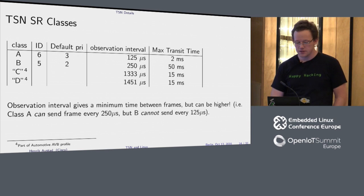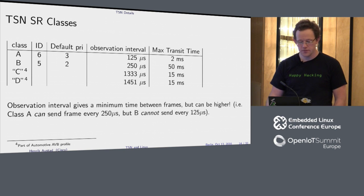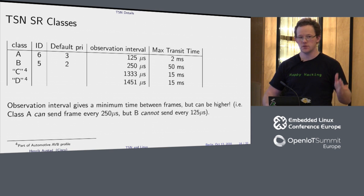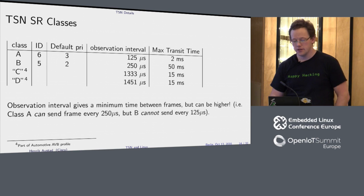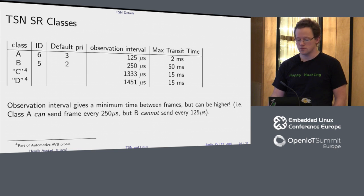There are a few different traffic classes. A and B were the original ones. If you are a class A stream, you can send frames at most every 125 microseconds and you are guaranteed a max transit time of two milliseconds from start to end — that translates directly into not needing more than two milliseconds of buffering on your microphone or speaker. Class B is 50 milliseconds because then you're allowed to jump over wireless links as well. They recently added C and D for automotive, with interesting observation intervals of 750 Hz and something Hz.